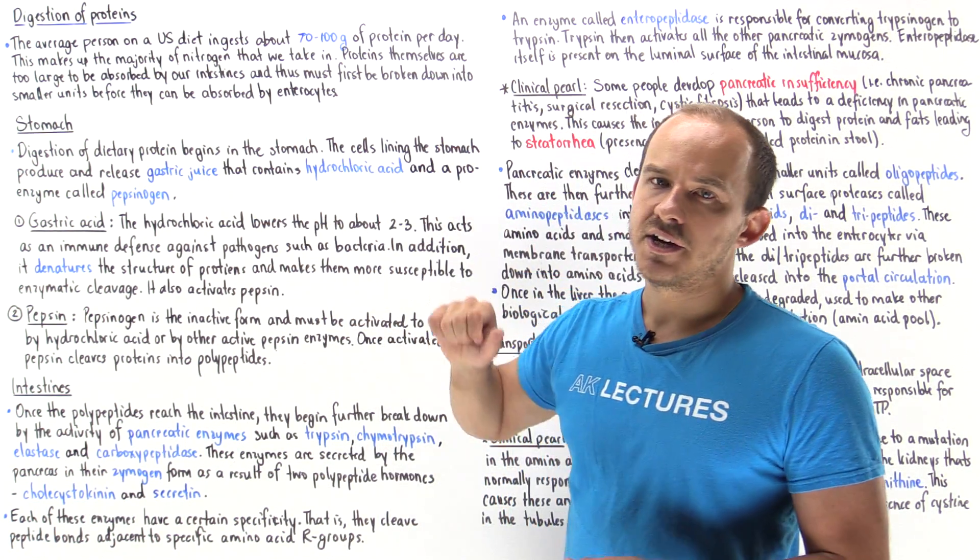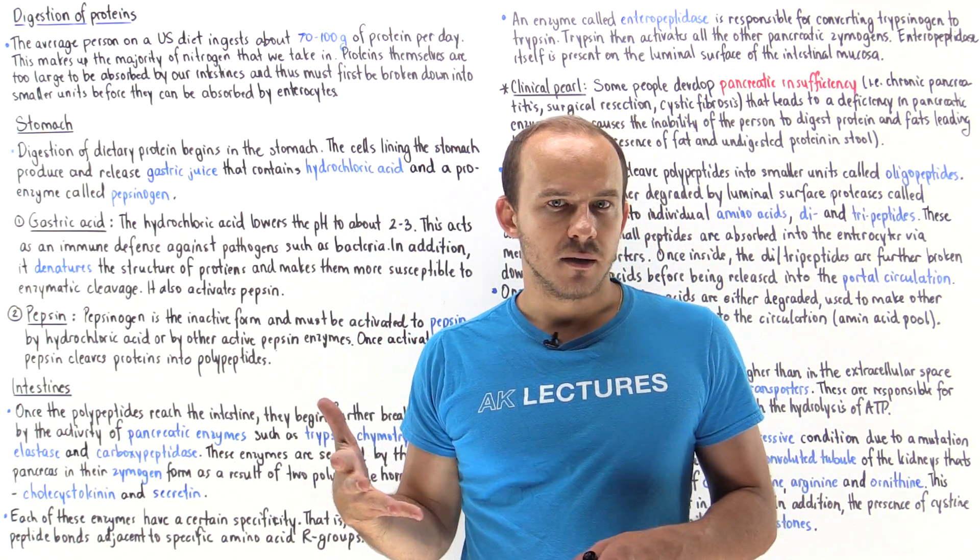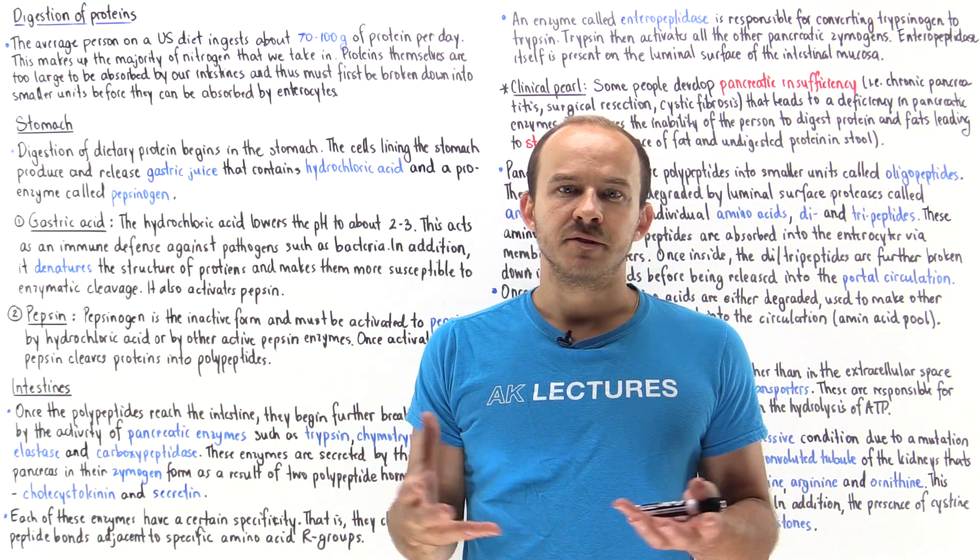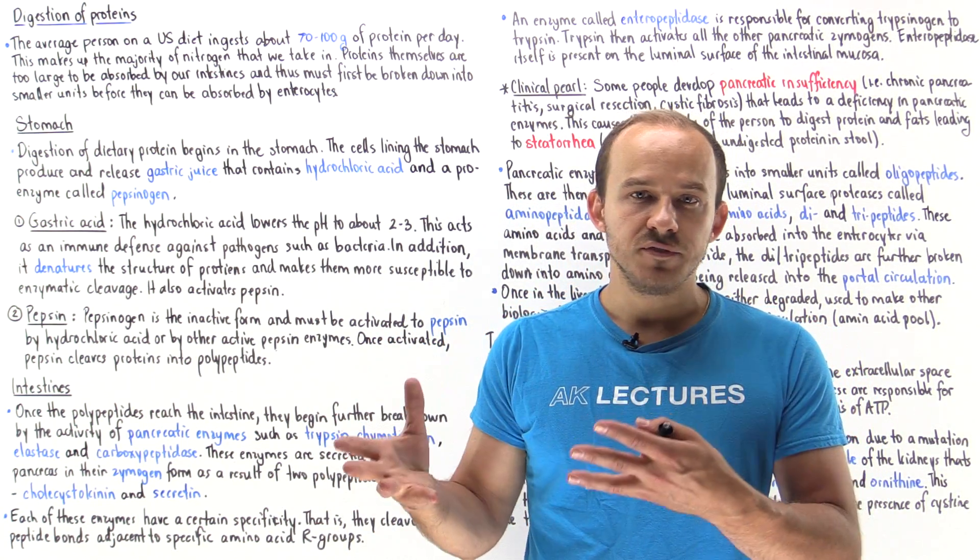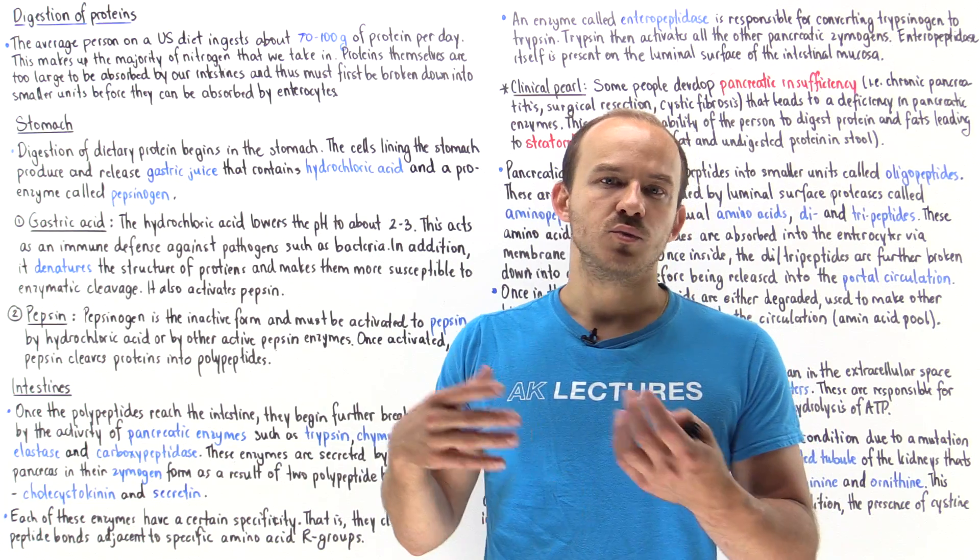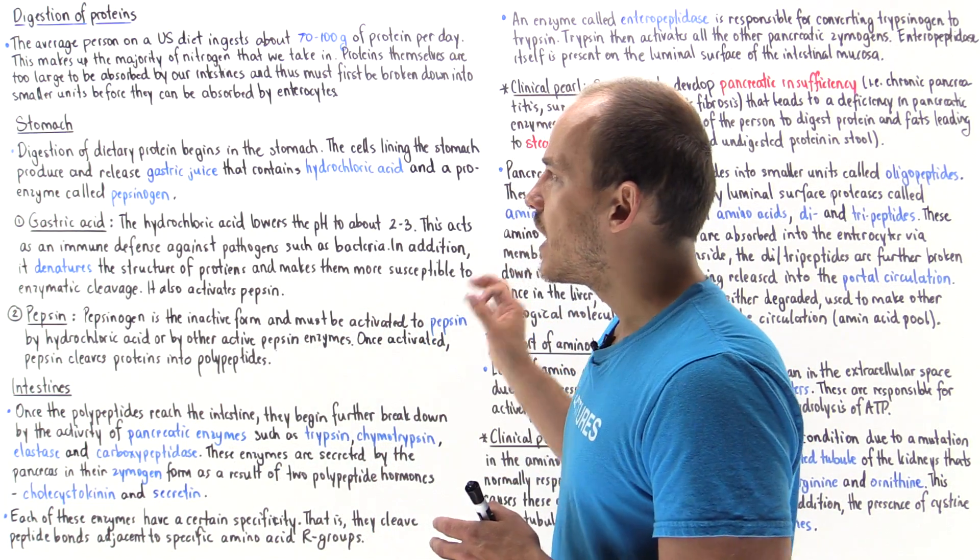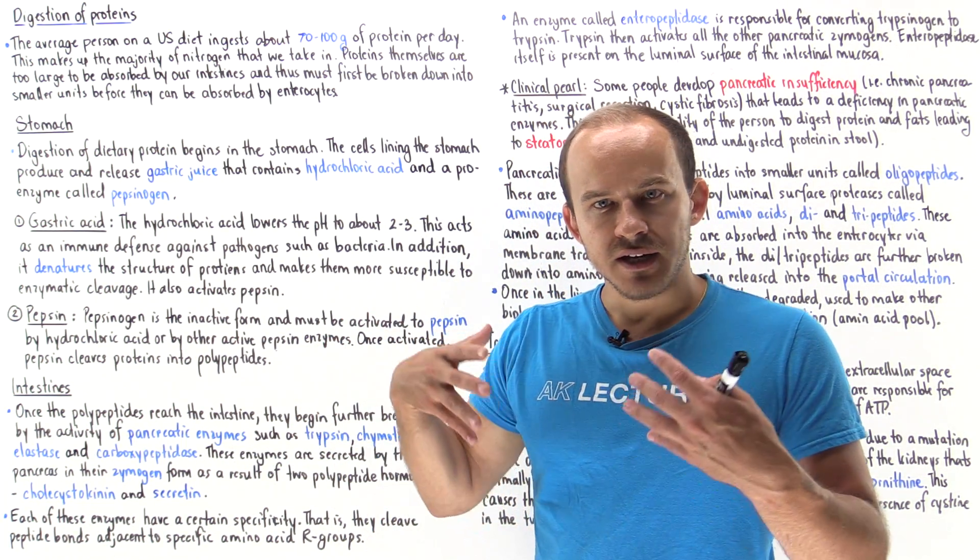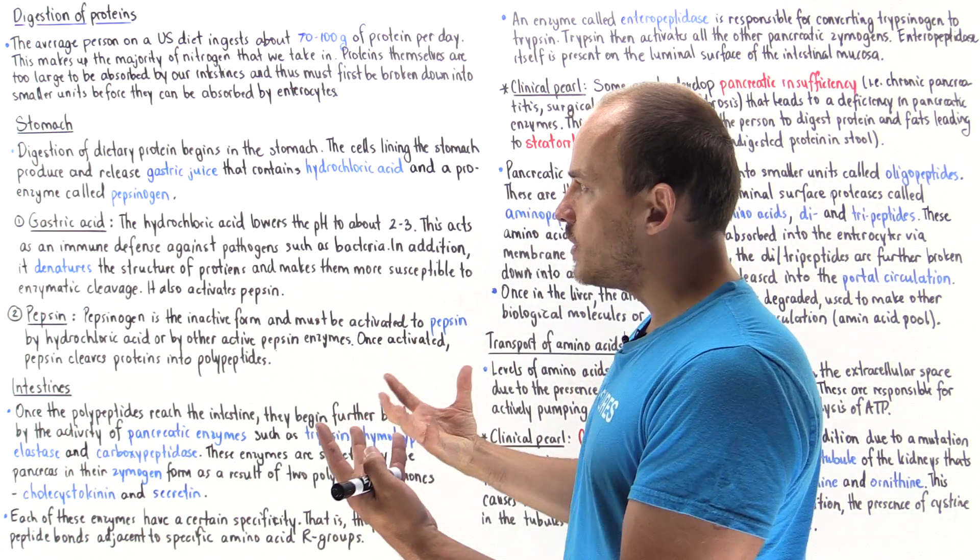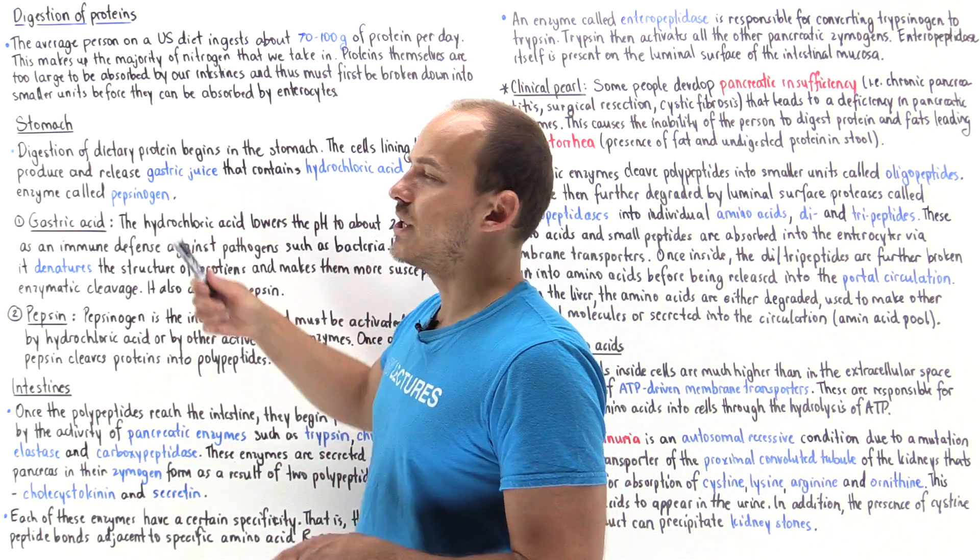Now digestion of dietary protein begins within our stomach. Our stomach is lined by many different types of specialized cells—chief cells, parietal cells, gastric cells, and so forth. Each one of these cells plays an important role in contributing to the formation of what we call gastric juice.